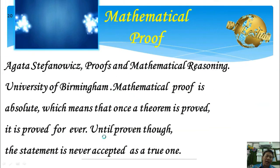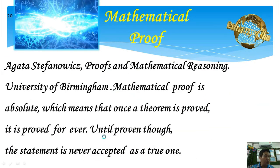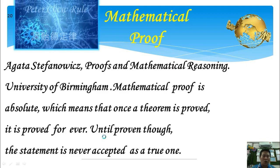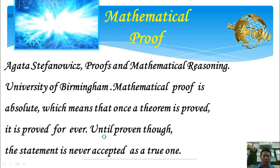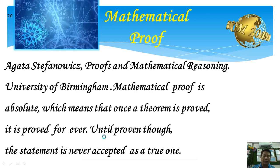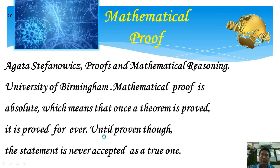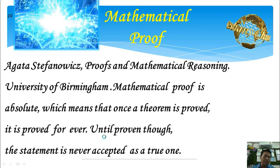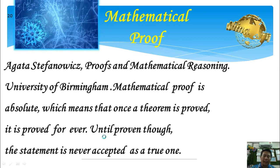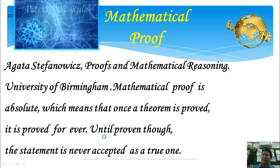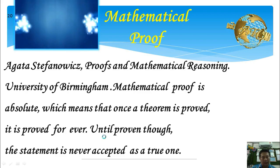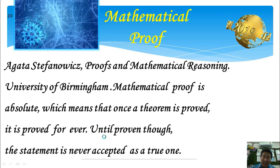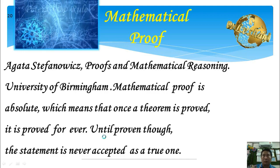I agree with Agatha Stefanovic from the University of Birmingham that mathematical proof is absolute — once a theorem is proved, it is proved forever. Until a theorem is proven, the statement is never accepted as true. In my opinion, no one can claim they created a rule unless they can prove it. Similarly, no one can conclude someone is guilty unless they have evidence to prove it.